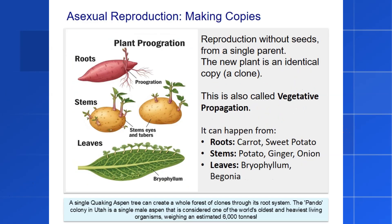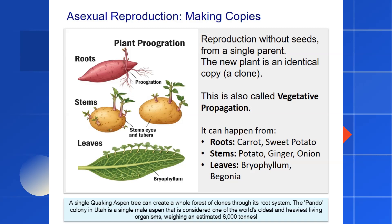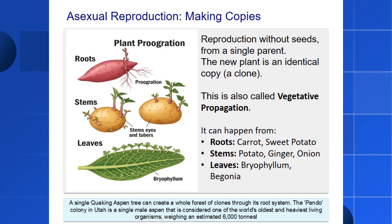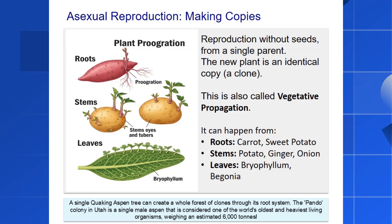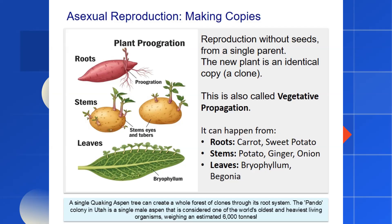Now let's switch gears to the other method: asexual reproduction. This type of reproduction doesn't involve flowers, pollination, or seeds. Instead, a new plant grows from a part of the parent plant. This is also known as vegetative propagation. Because it comes from just one parent, the new plant is a genetic clone — an exact copy of the original. This is a much faster way to reproduce than growing from a seed. Many plants we use for food are grown this way. New plants can sprout from modified roots, like in carrots and sweet potatoes. They can also grow from stems — a potato, for example, is an underground stem and the eyes on it can sprout into new potato plants. Ginger is another type of stem that can be used. And amazingly, some plants like bryophyllum can even grow new plantlets right from the edges of their leaves.